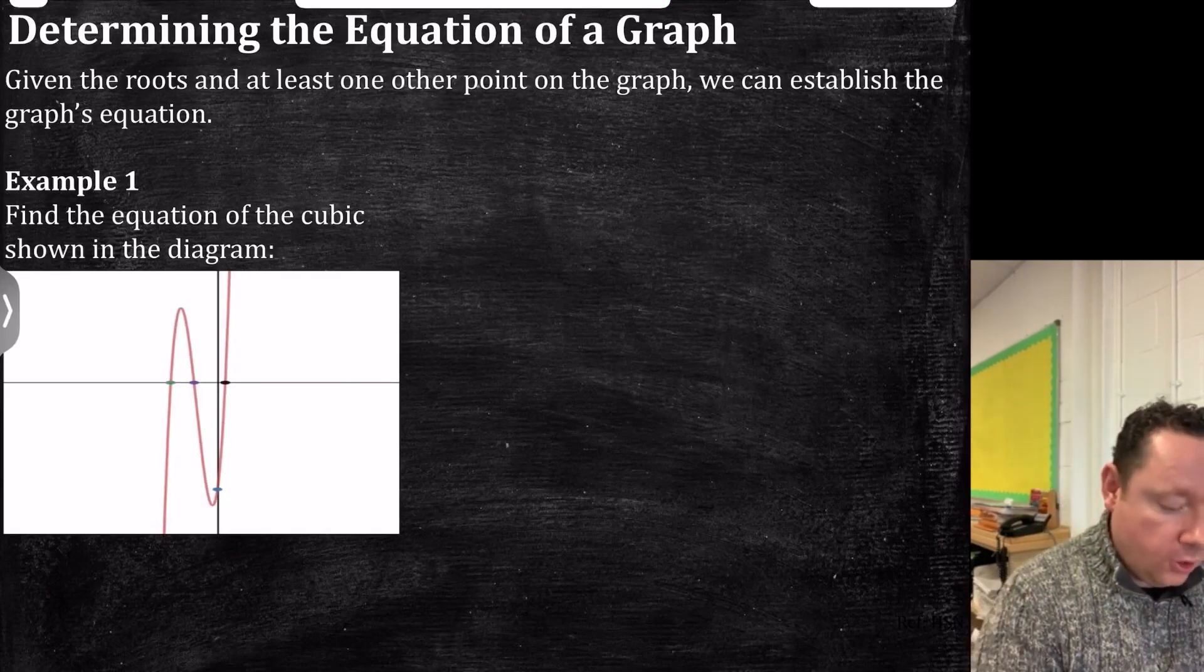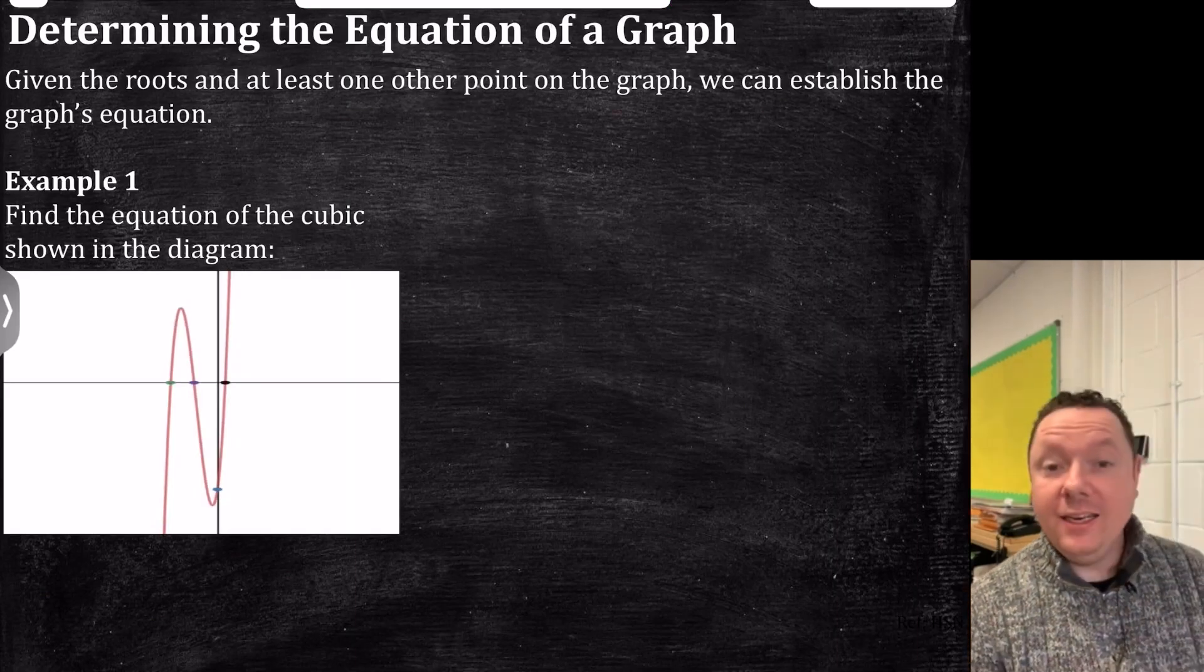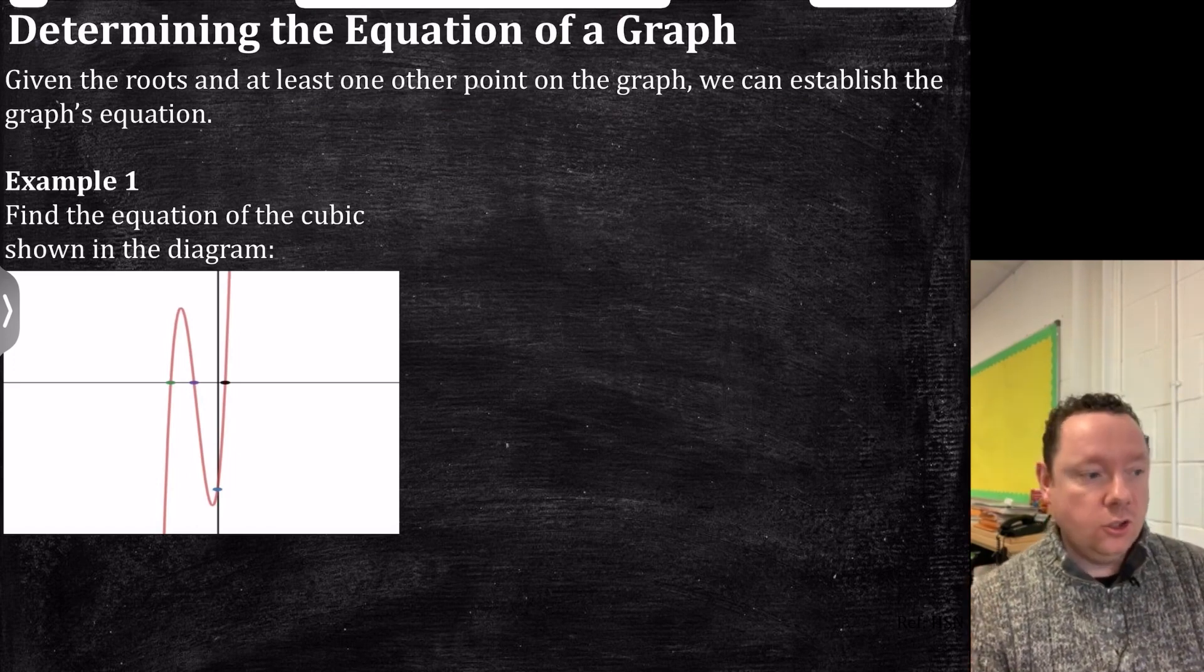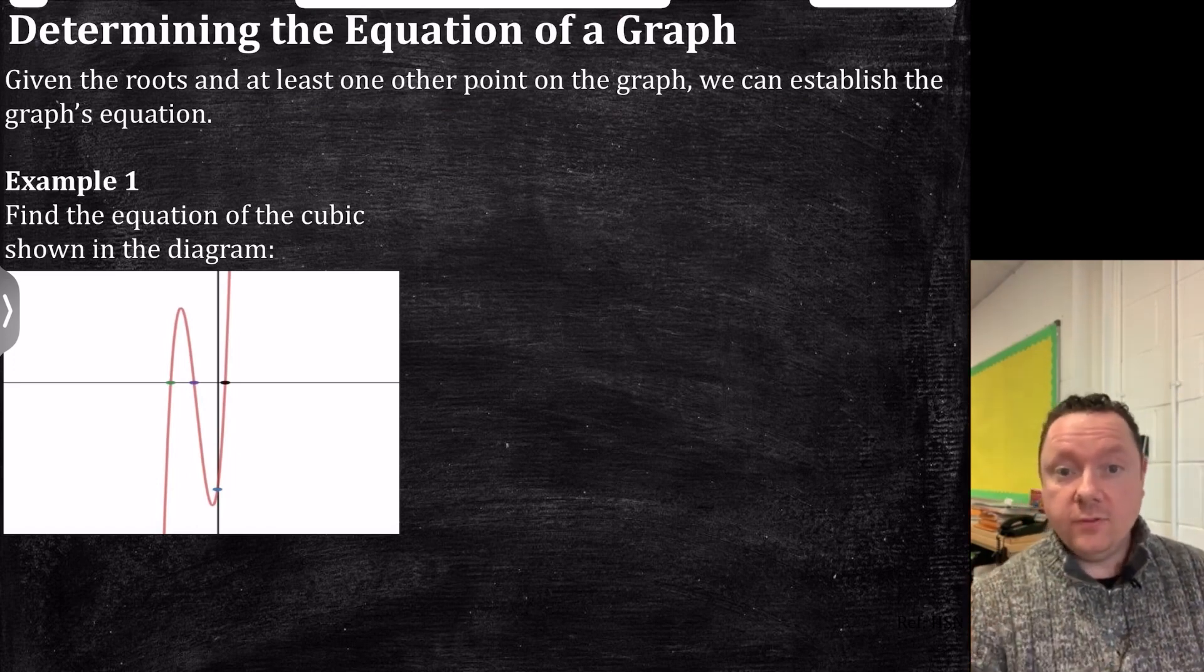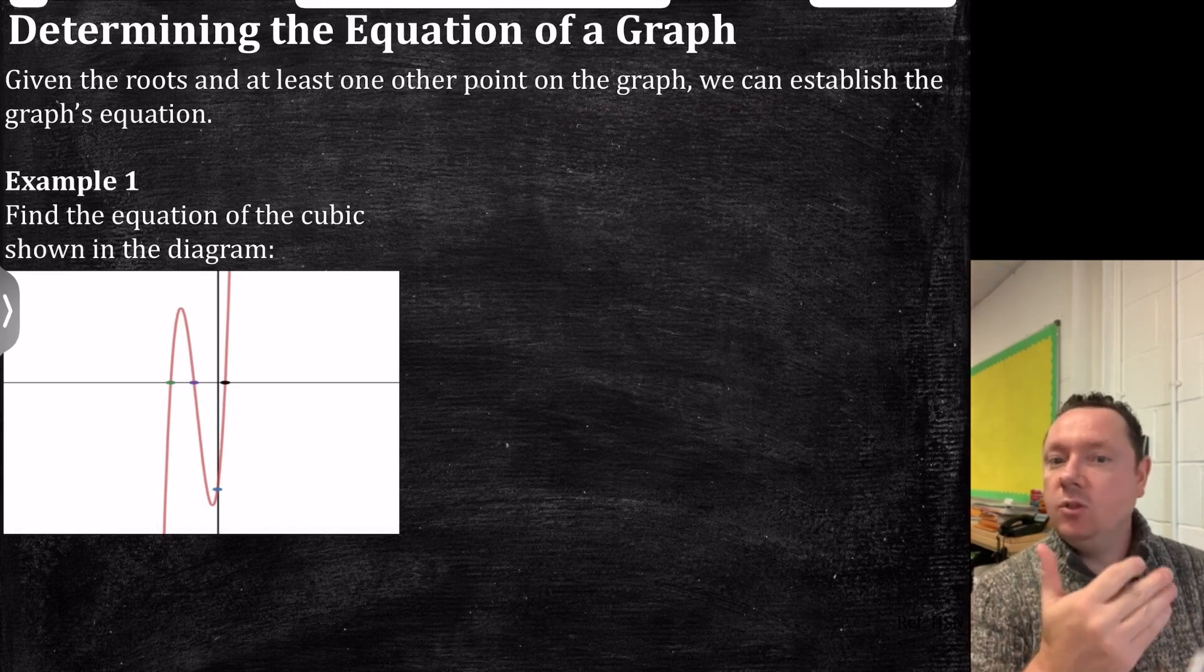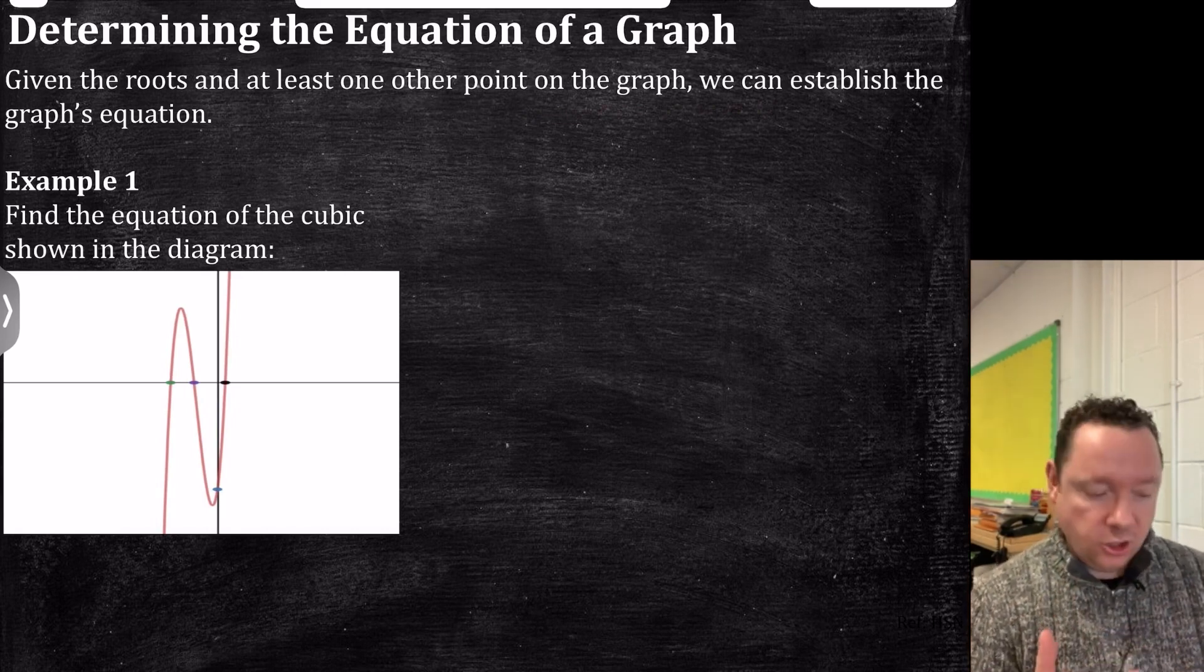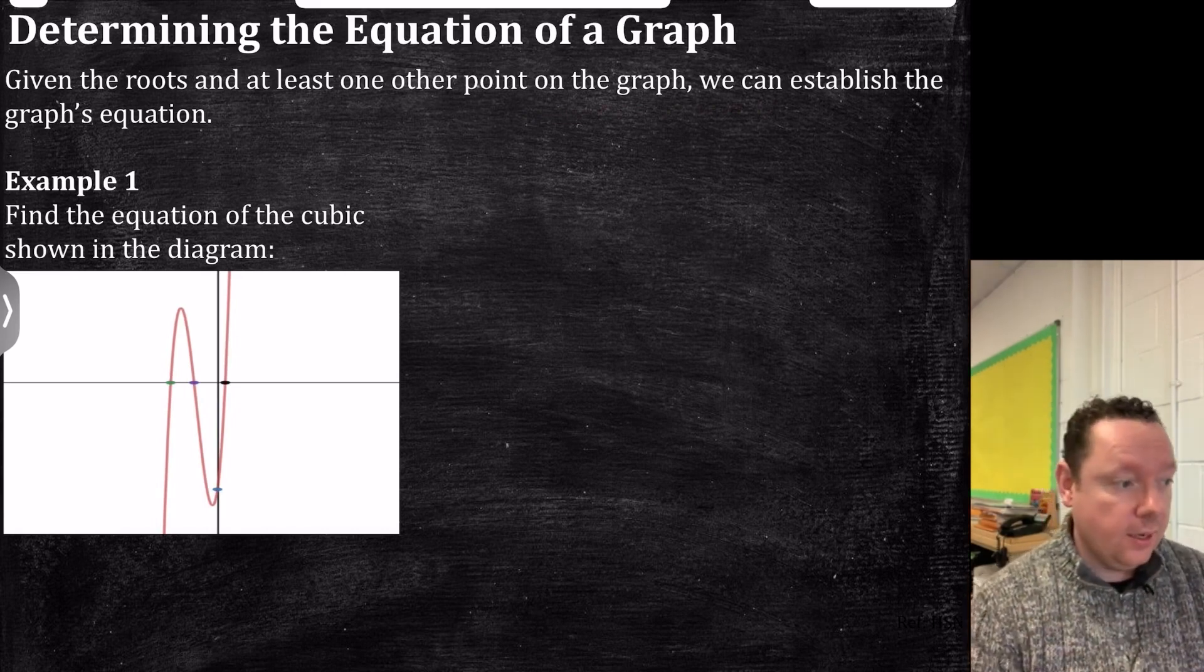Determining the equation of a graph. If we've got the roots and at least another point on the graph, we can find the graph's equation. The equation is f of x equals factor times factor times factor, but it could also be times by some number, because the number in front of the roots doesn't change it. So we need a point to determine that.